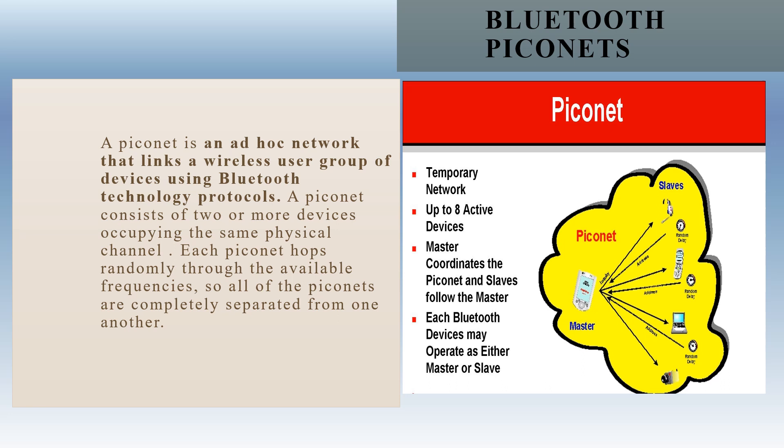To understand the role of Bluetooth Piconet: a cordless telephone has one Bluetooth transmitter in the base and another in the handset. The manufacturer programs each unit with an address that falls into a range established for that particular type of device. When the base is first turned on, it sends a radio signal asking for a response from any units with an address in that particular range. Since the handset has an address in the range, it responds and a tiny network is formed. Even if one of these devices should receive a signal from another system, it will ignore it since it is not from within the network. Each Piconet hops randomly through available frequencies, so all Piconets are completely separated from one another.